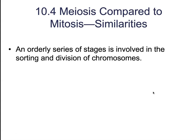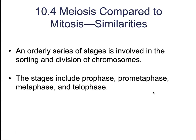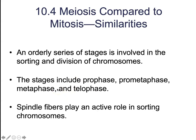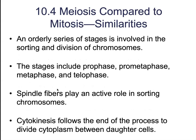In terms of their similarities, both mitosis and meiosis are an orderly series of stages involved in the sorting and division of chromosomes. In both cases, those stages include the very similar phases of prophase, prometaphase, metaphase, anaphase, and telophase. The spindle fibers are going to play an active role in sorting out the chromosomes, and cytokinesis is going to follow at the end of the process to divide the cytoplasm between the daughter cells.